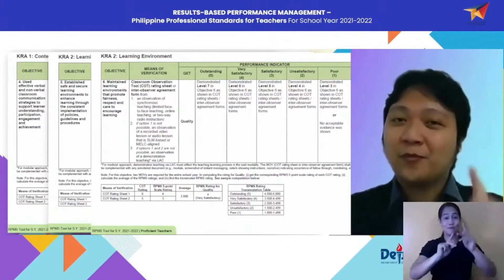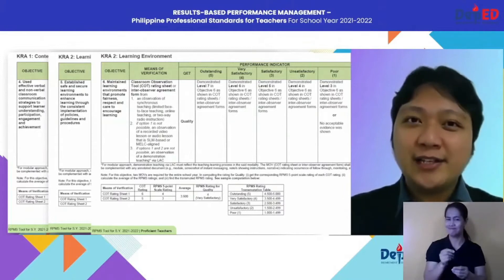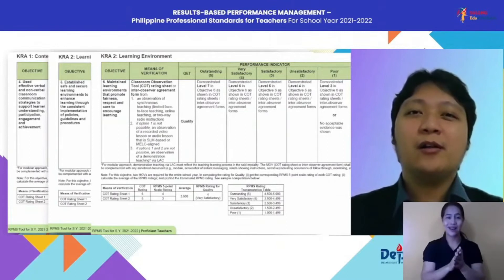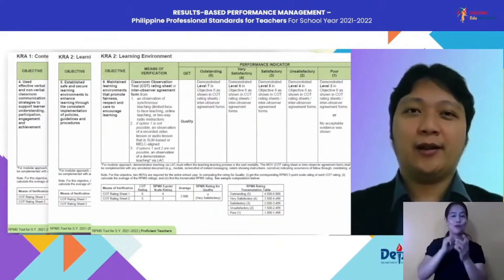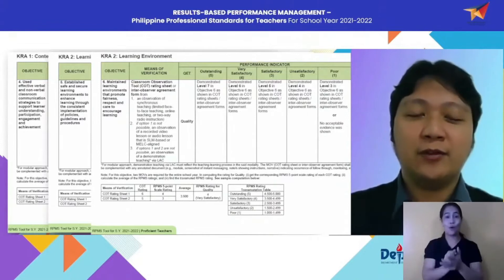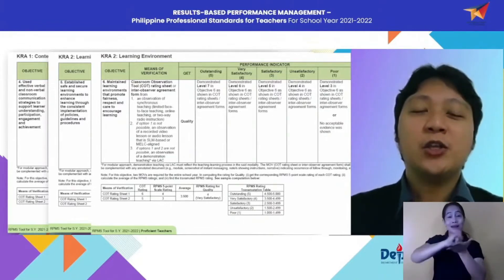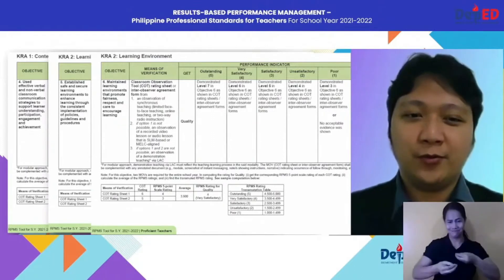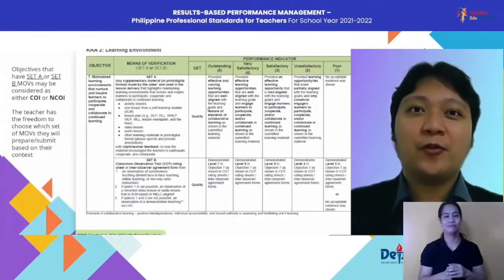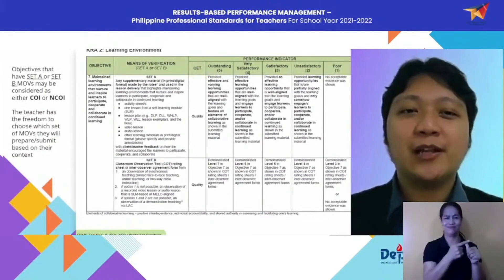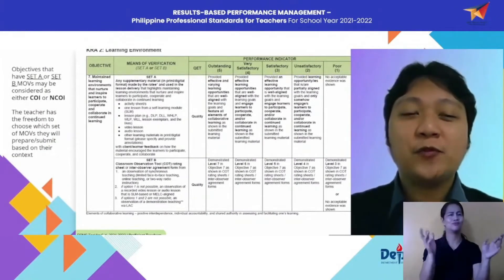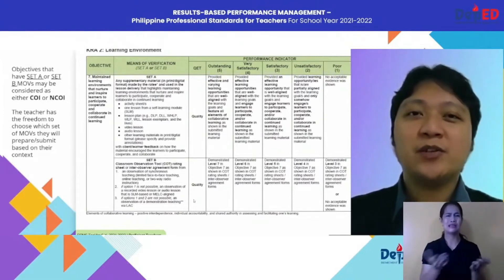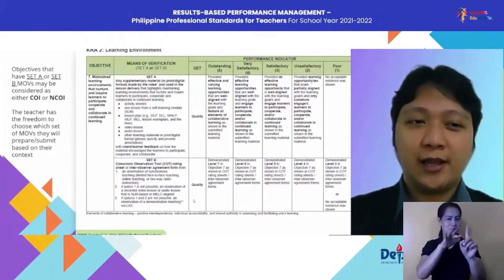One tip for us, whether you are the ratee or the rater: please refer to the Classroom Observable tool rubric for these objectives. That document will be found on the link provided in the DepEd memorandum. That ends our first few sets of Classroom Observable indicators. The next few objectives have a combination of Classroom Observable indicators and non-Classroom Observable indicators.